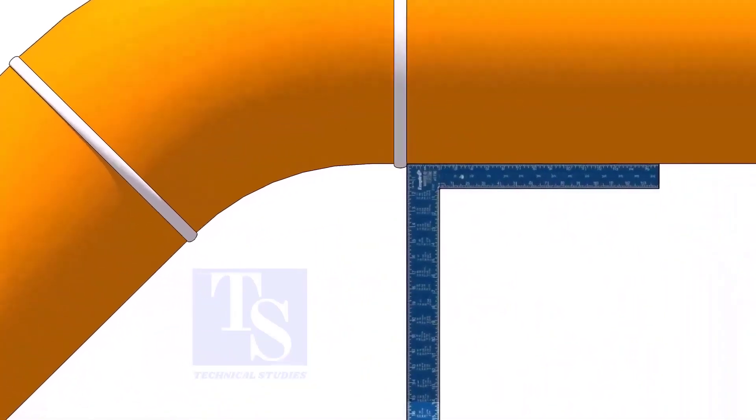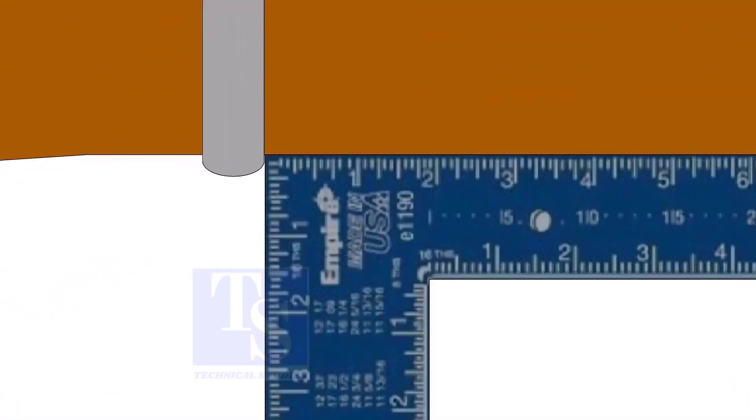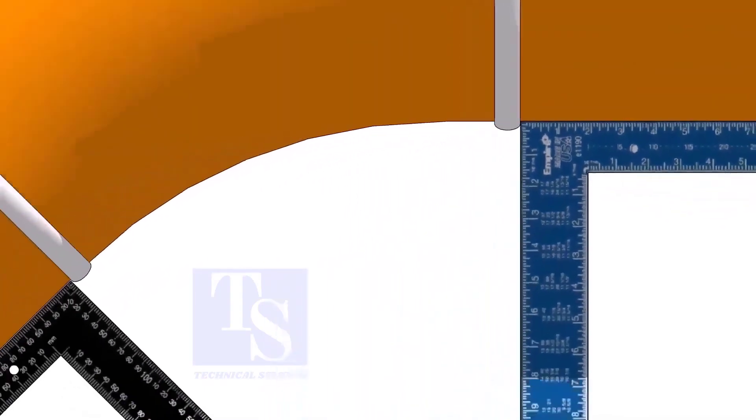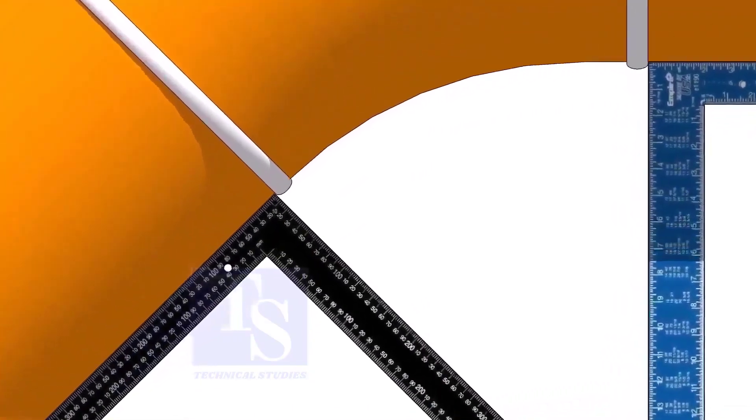Hold one right angle on the pipe just outside the weld joint, as shown. Hold another right angle on the other pipe. Make sure both the right angles are sitting on the center of the pipe.